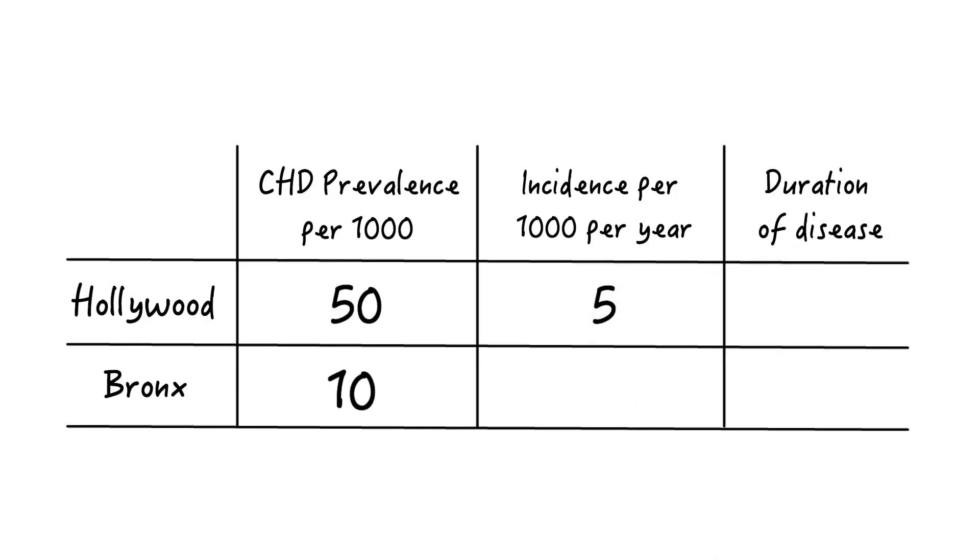Incidence is 5 per 1000 per year in both locations. But duration of disease is 10 years in Hollywood due to better care, whereas in the Bronx, people die from CHD after two years. So in fact, the higher prevalence in Hollywood is just an expression of better care of an incurable disease.